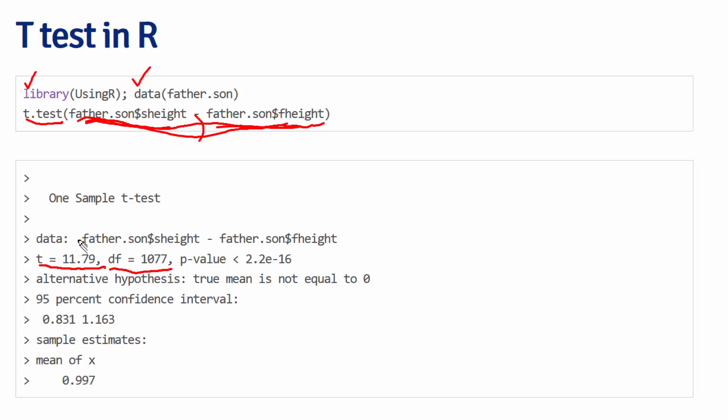Now, 11 is a quite large t statistic, so we reject the null hypothesis in this case. Also notice that the degrees of freedom are quite large, so the distinction between a z-test and a t-test in this case is irrelevant.